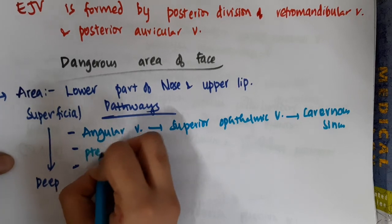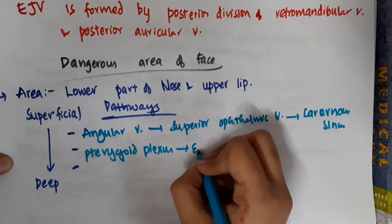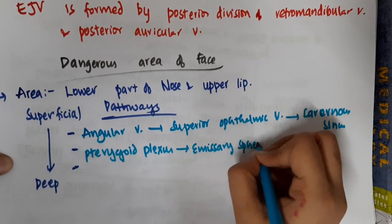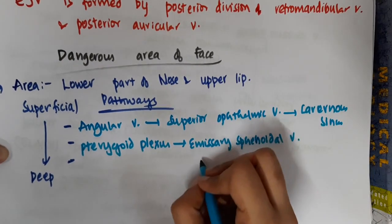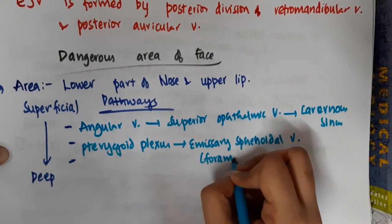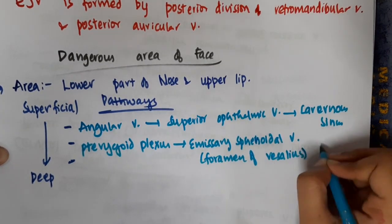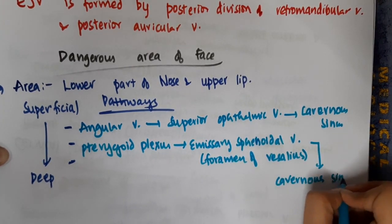Then from pterygoid plexus, it goes into emissary spinoidal vein. Emissary spinoidal vein is also called the foramen of Vesalius. From there it goes to cavernous sinus again.